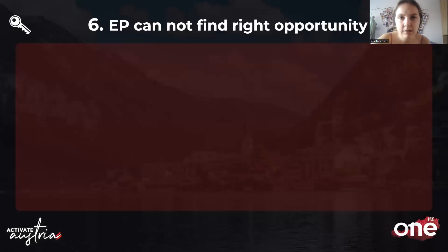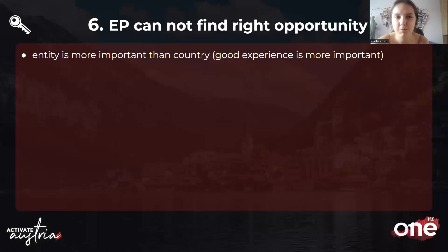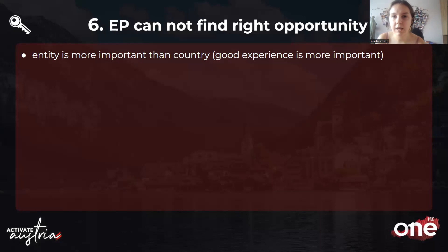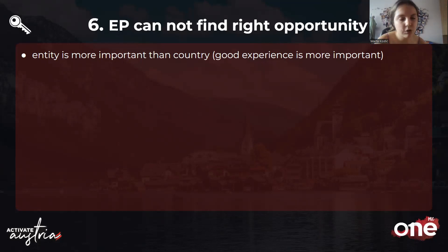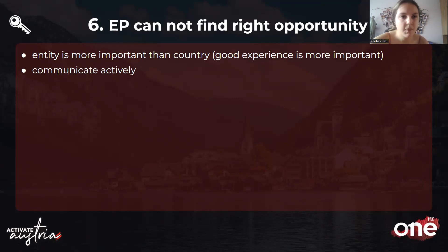The last objection: EP cannot find the right opportunity. This is often an excuse. OGX literally exists to help with this. If you see EP is choosing opportunities only based on country, explain that the entity itself is much more important than the country. A good experience is more important than going to a fancy place like Paris or Madrid. It's more important that the ISIC in that place is good, so you will have a good experience — that's why we focus on our IR partners, not on selling fancy countries.